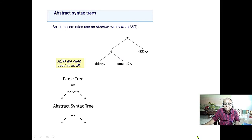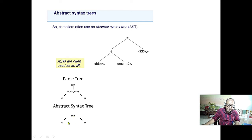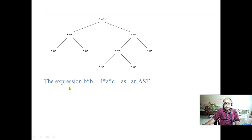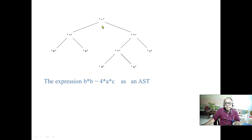Here is another example of the abstract syntax tree. All the operational nodes — minus, plus — are internal nodes, while identifiers like idx and id1 are leaf nodes. That was the parse tree; this is the abstract syntax tree. Another example: take the famous expression b² − 4ac. In the AST, b*b gives b², then 4*a*c gives 4ac, and b² minus 4ac is the root. This is the abstract syntax tree version of b² − 4ac.